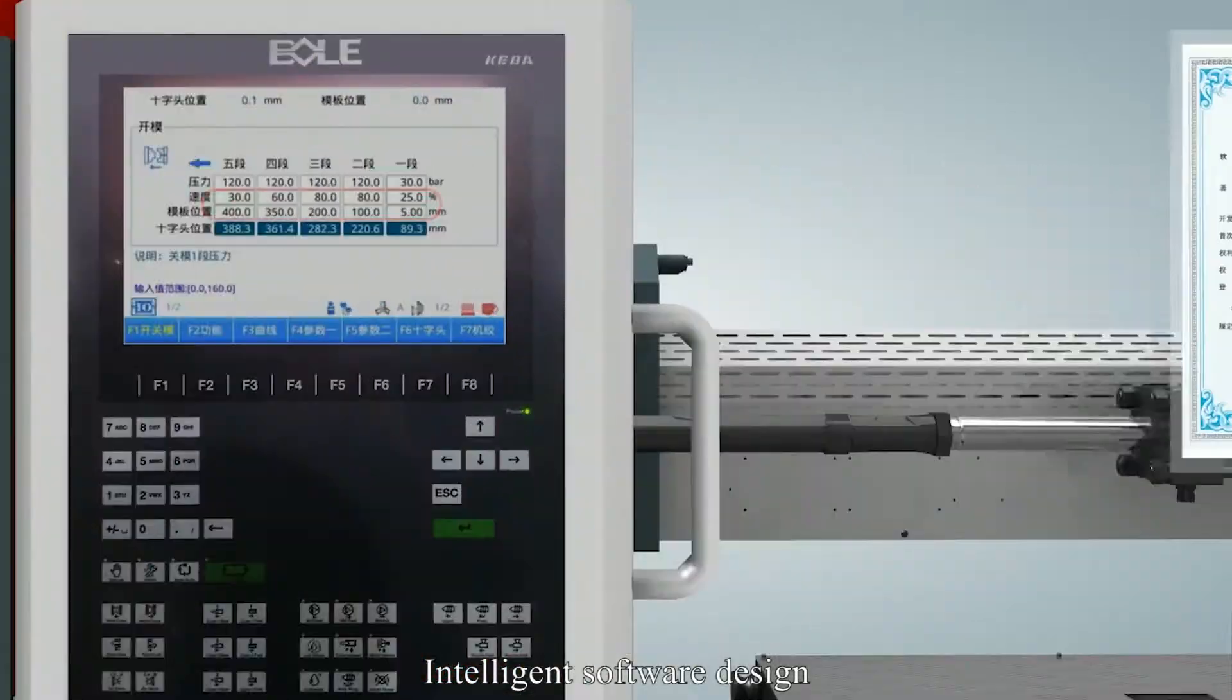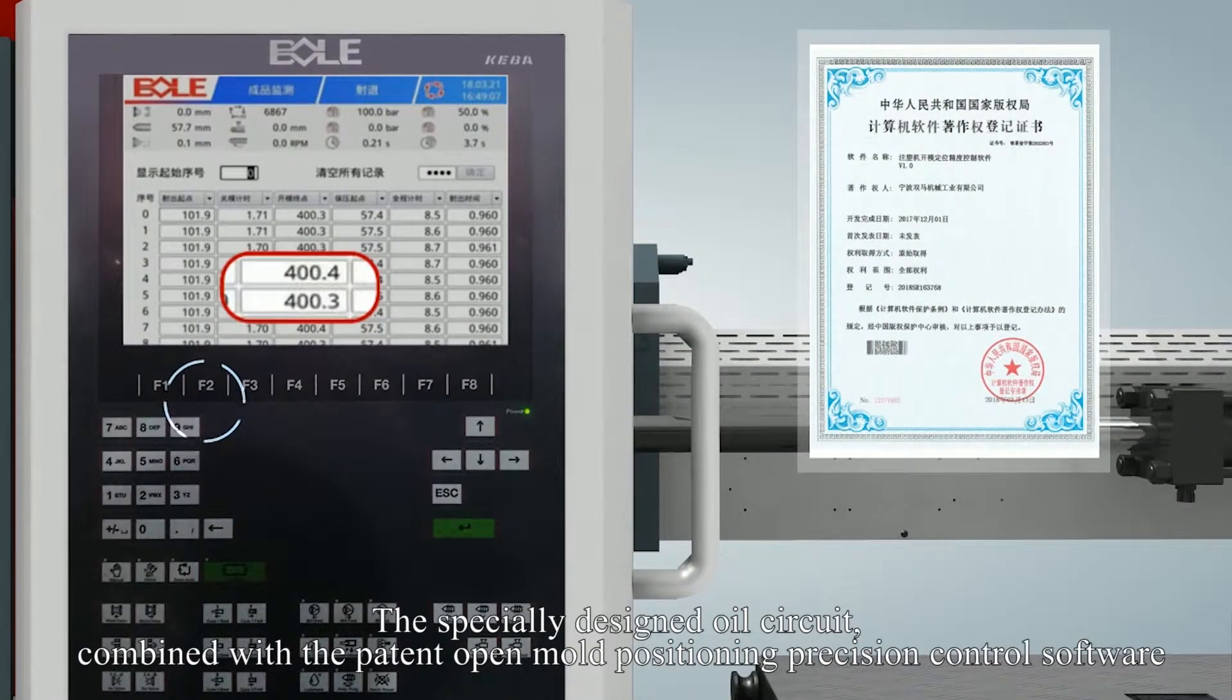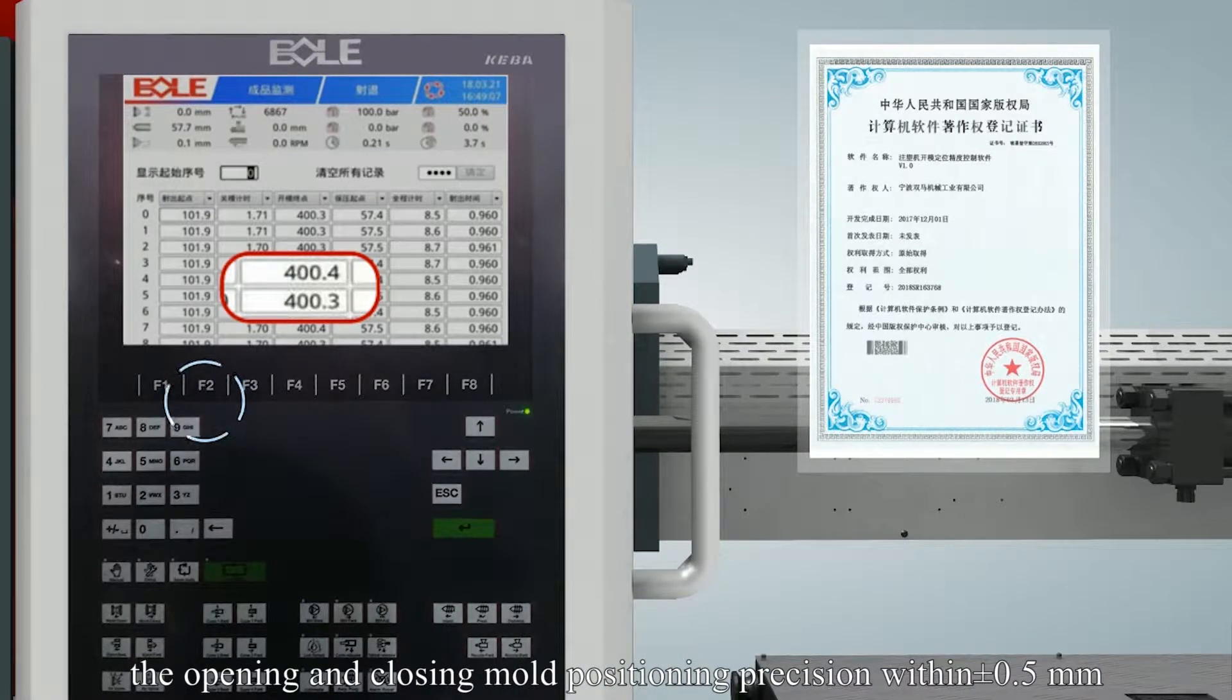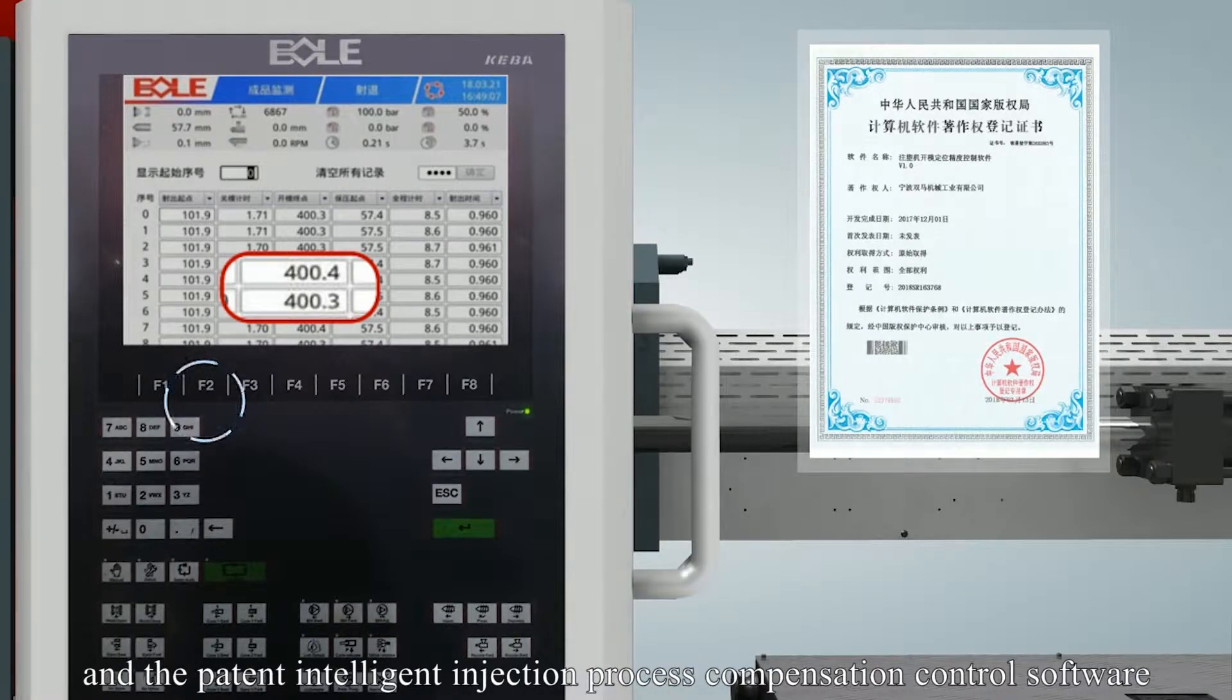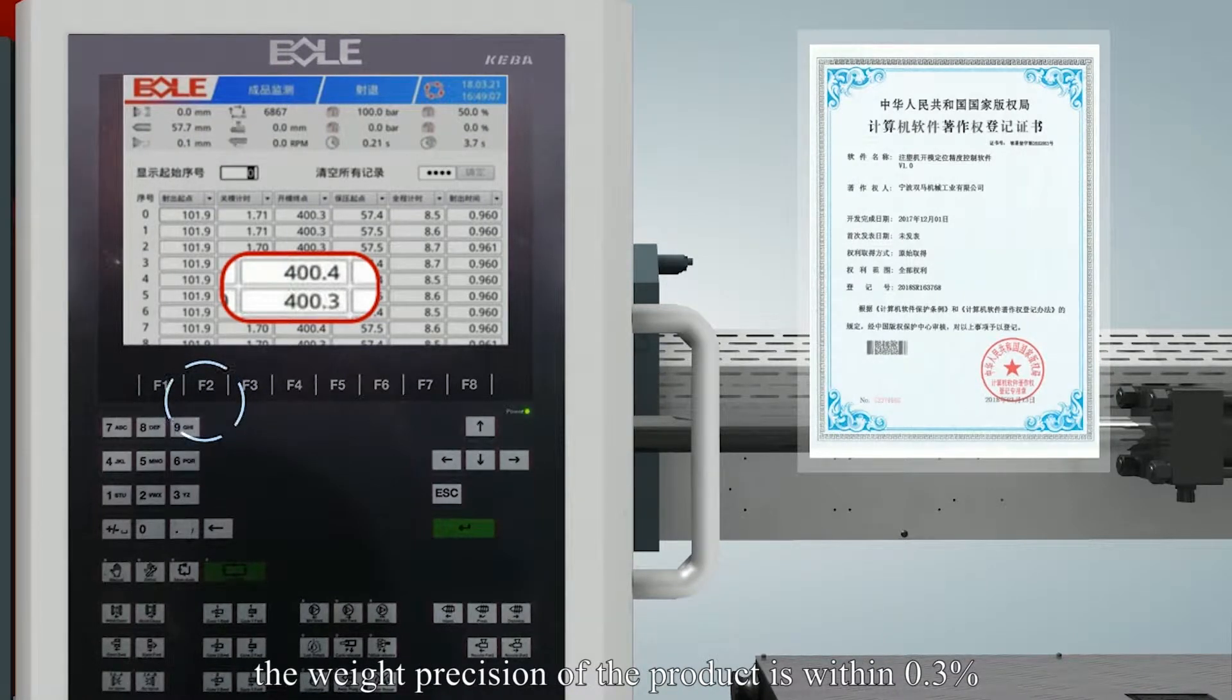Intelligent software design: the specially designed oil circuit combined with the patent open mouth positioning precision control software. The opening and closing mouth positioning precision within ±0.5mm. With the patent intelligent injection process compensation control software, the weight precision of the product is within 0.3%.